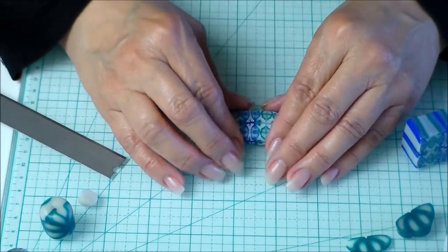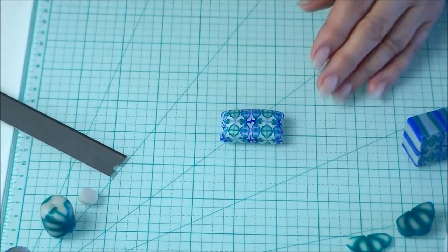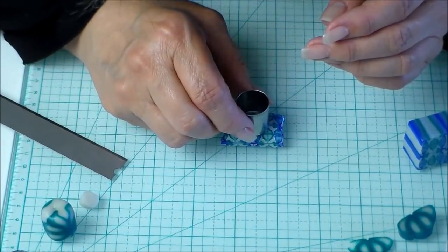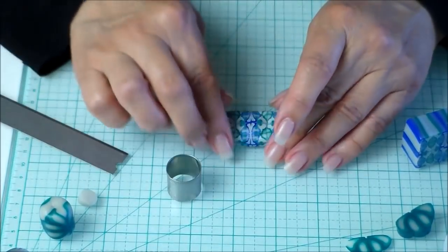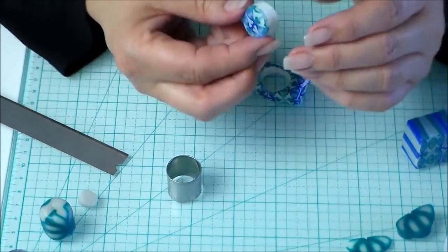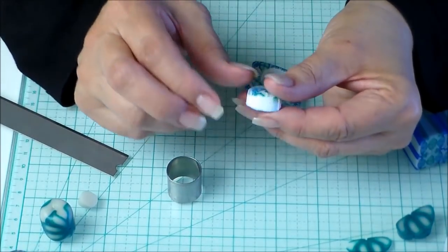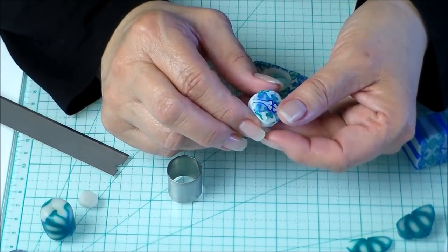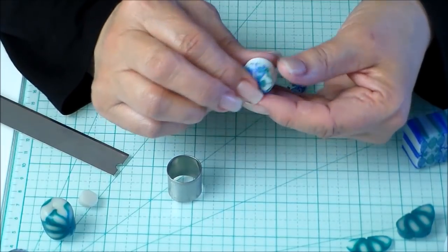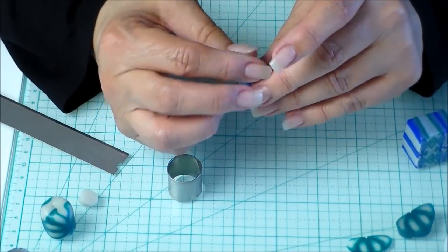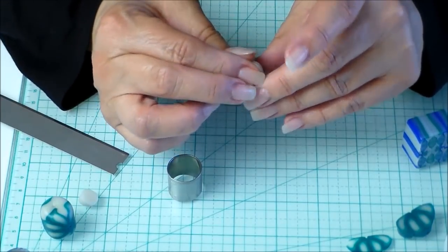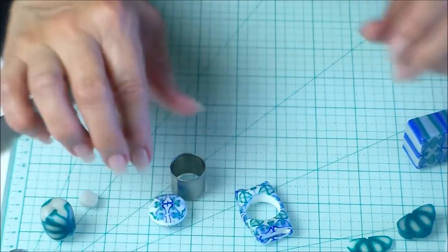For this one I'm just going to cut through it, make a little kind of a little buttony shaped bead. If you don't like the edges being white, you can put mica powder on them or you can even put a strip of cane on there if you want to. I don't mind the white showing in this. I think it's kind of pretty that way.